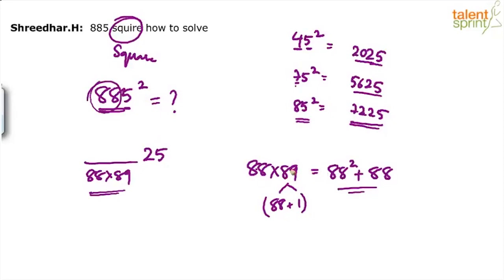Or maybe you can say 8800 minus 880 minus 88. If you want to take 89 as 100 minus 10 minus 1, so what happens? 88 into 100, 8800 minus 88 into 10, 880 minus 88 into 1, 88. That's one more way of doing it.